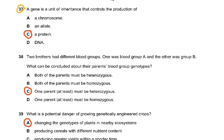Question 37: a gene is a unit of inheritance that controls the production of a protein — yes, that's what the syllabus says. It can't be called an allele; there are different alleles of a gene. A chromosome is made of DNA, and a section of the chromosome is called a gene. We must be very clear on the distinction between chromosome, gene, and allele.